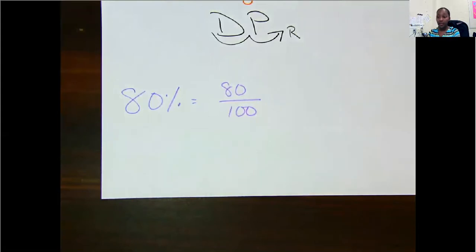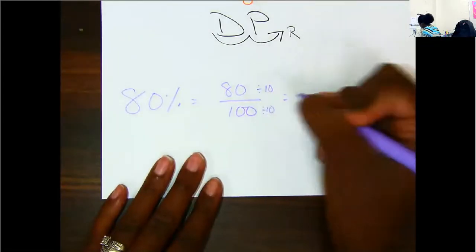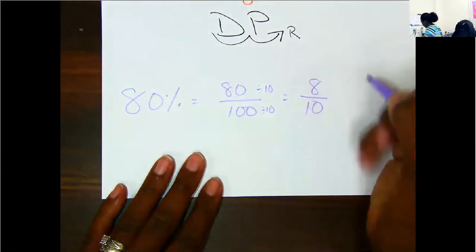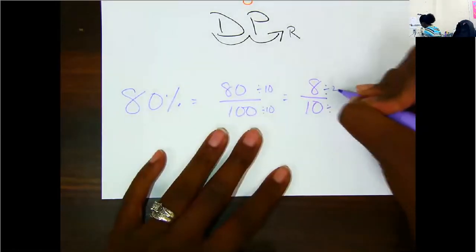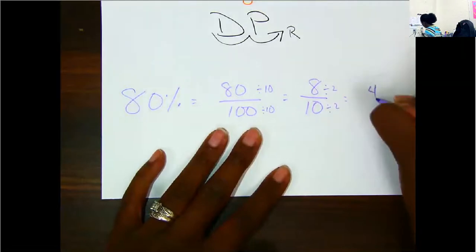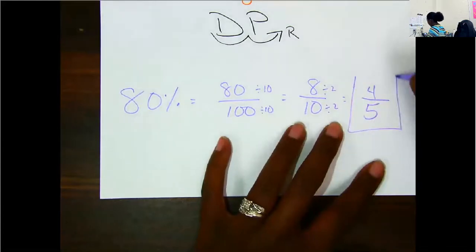But remember, you have to simplify a fraction if you can. 80 and 100 are both even numbers. They both end in zero, so I know I can divide by 10. So I'm going to divide by 10. I now have 8 over 10. They are both still even. I can divide by 2. Divide by 2. I now have 4 over 5. 4 over 5, or 4 out of 5, is as simple as I can go. So I'm going to go ahead and box that answer in.